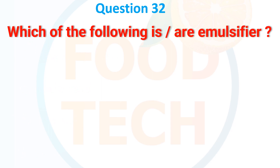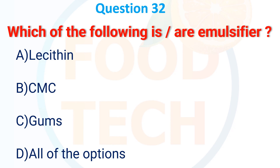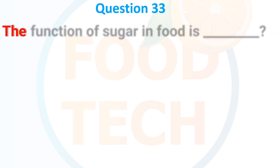Which of the following are emulsifiers? A. Lecithin, B. Mono and diglycerides, C. Gum, D. All of the options. The answer is D. All of the options.